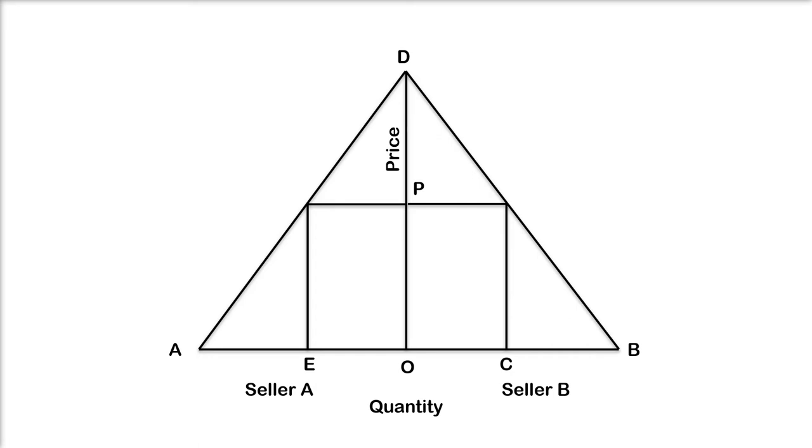Now suppose there is no collusion between the two and let's say A is already selling OE units at OP price. Now B thinks that A will not change his price. So he sets a lower price OP1 and attracts some of A's customers and now B sells OF output.